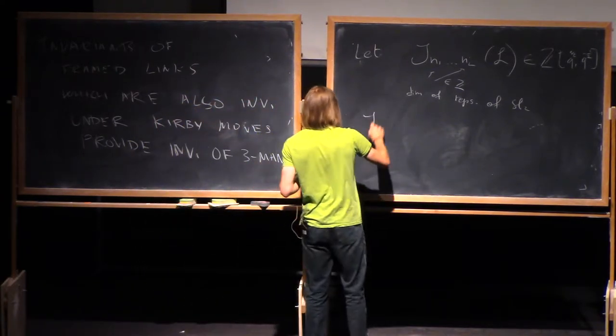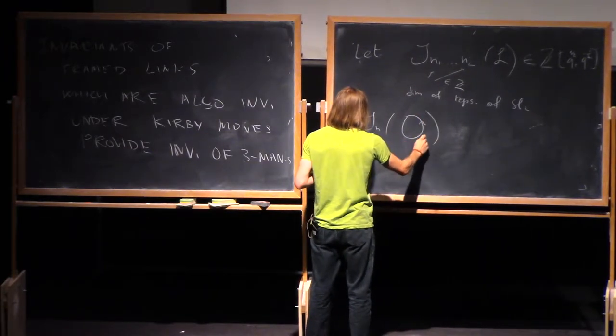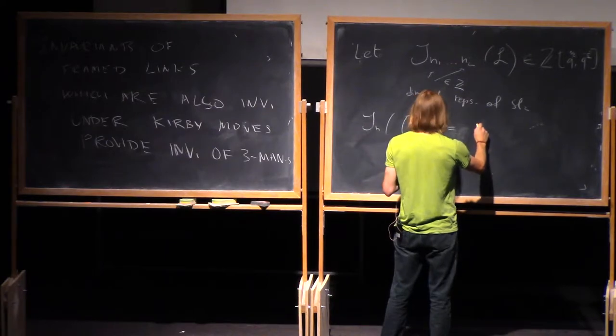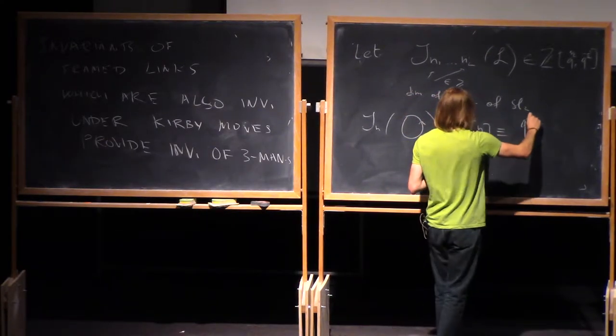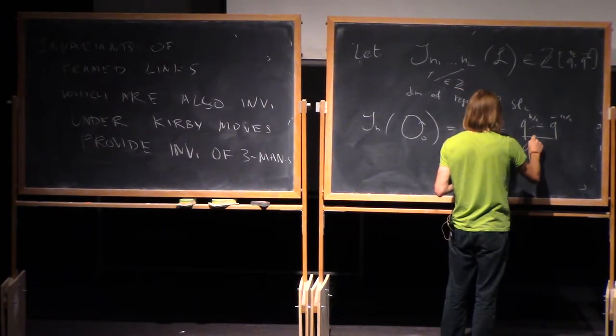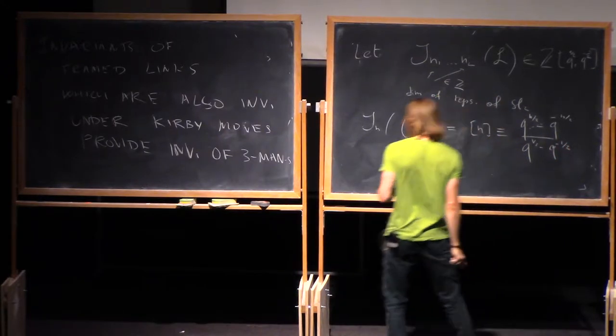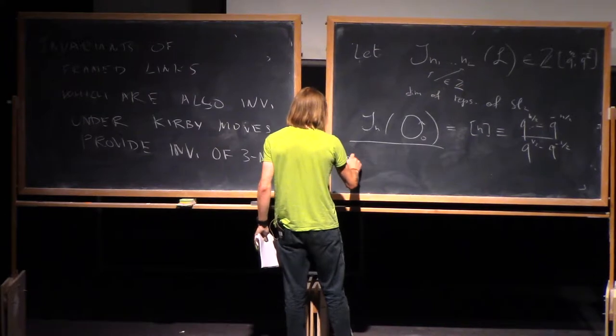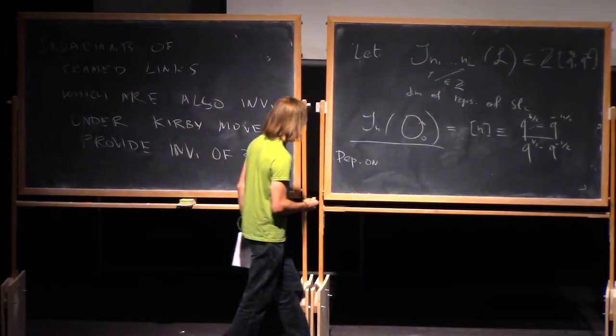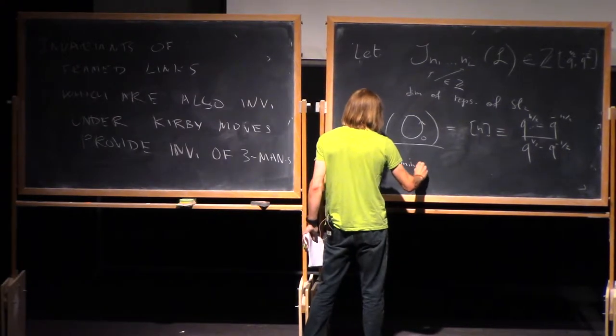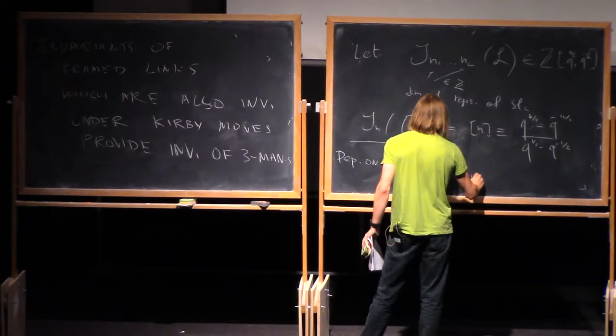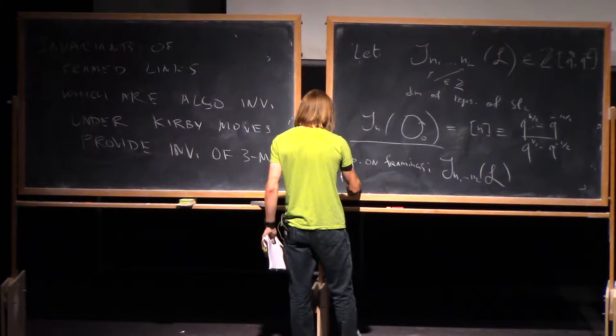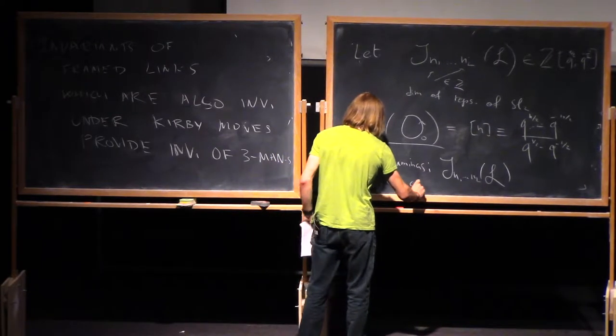And these integer numbers correspond to dimension of representations of SL2. And in my normalization, I will use normalization so that the Jones polynomial, the colored Jones polynomial, unframed unknot is just a quantum number N. So here we consider the Jones polynomial of colored Jones polynomial of framed link, but the dependence on framings is very simple.